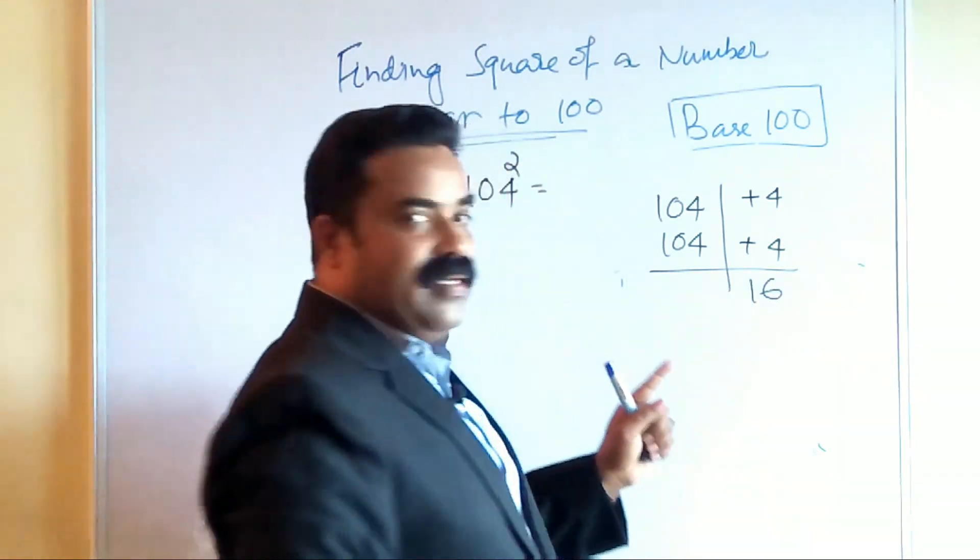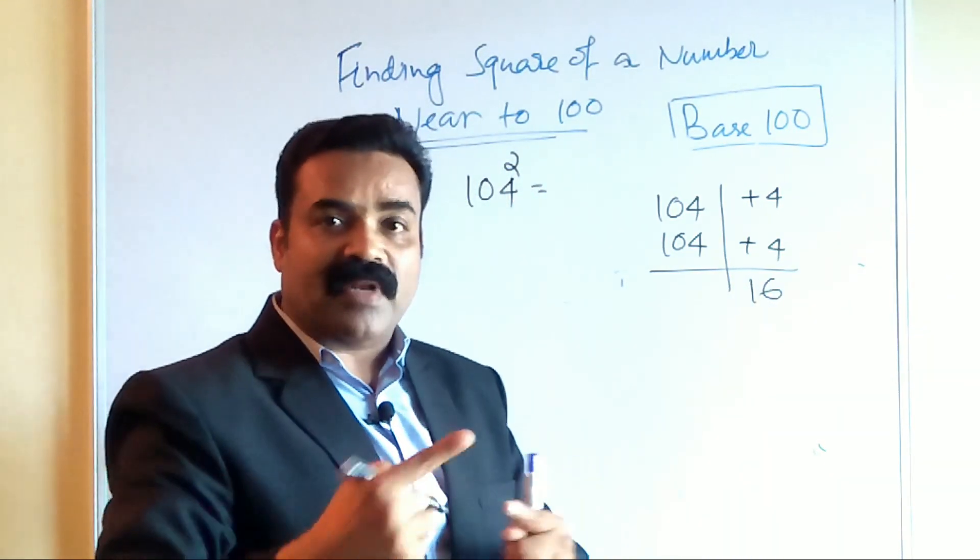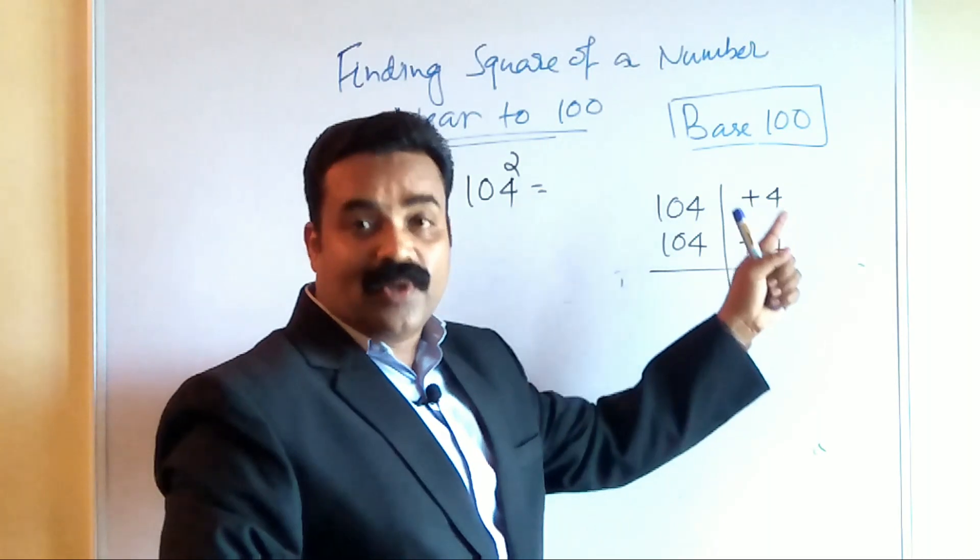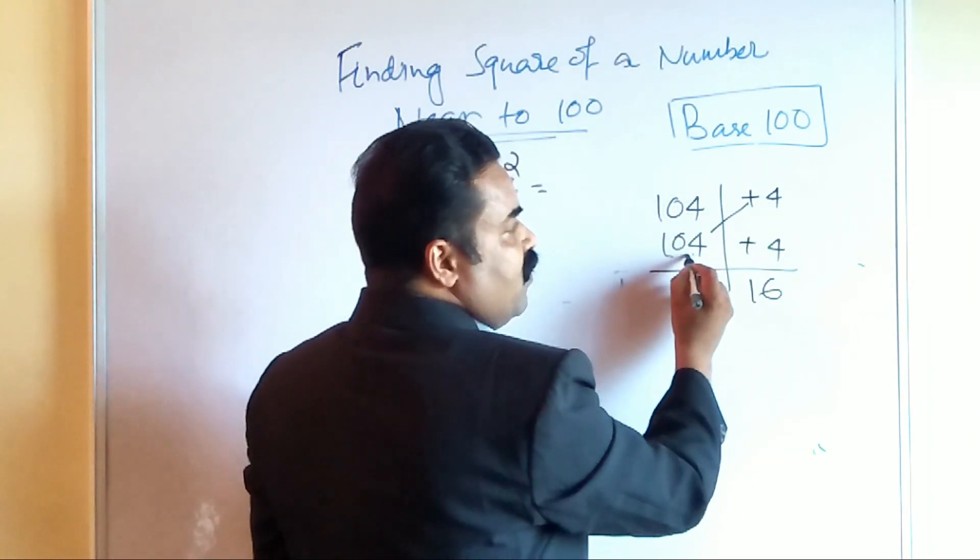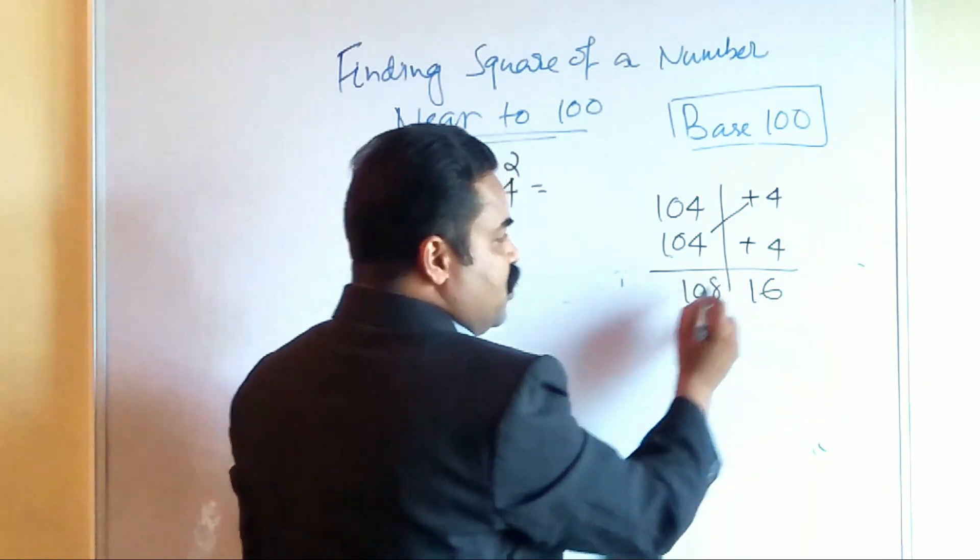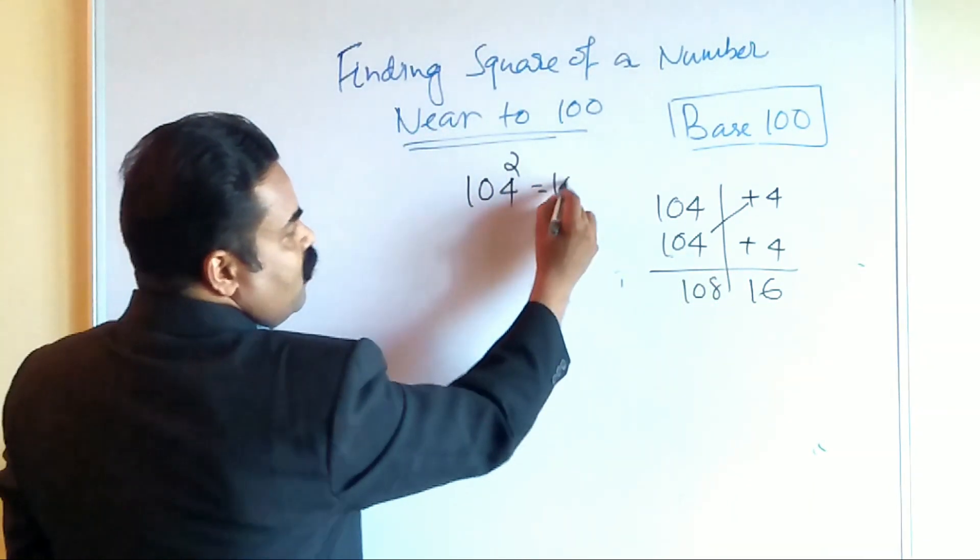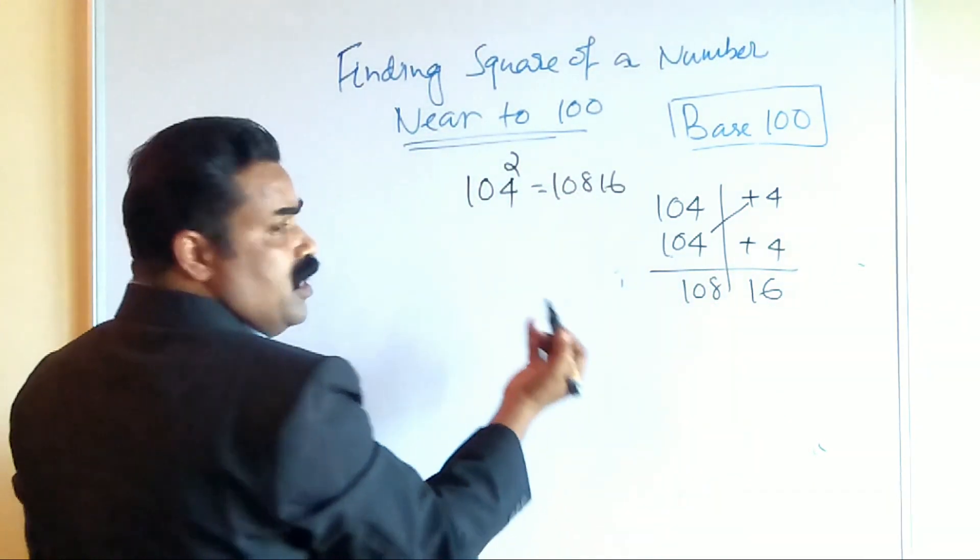Here in the last example we have done cross subtraction. Here we have to do cross addition. So 104 plus 4, cross addition. 104 plus 4 is 108. So I can say the answer is 10816.